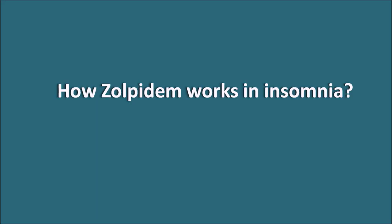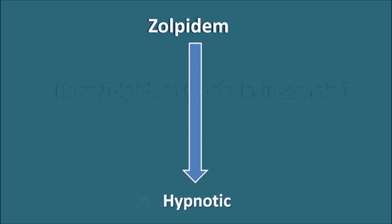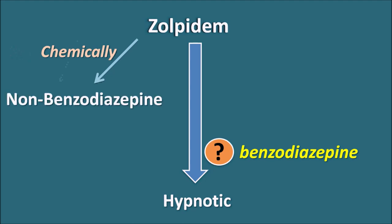How does Zolpidem work in insomnia? Zolpidem is a hypnotic drug, and particularly it is called a Z-hypnotic as the name starts with the letter Z. Whether Zolpidem is similar to benzodiazepines or not — in reality, Zolpidem is partly similar and partly not similar to benzodiazepines. Chemically, Zolpidem is not related to the benzodiazepines, so it is categorized as a non-benzodiazepine.